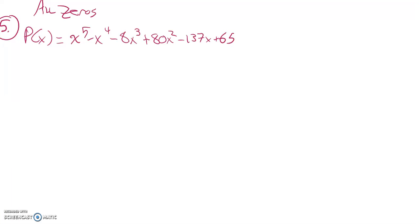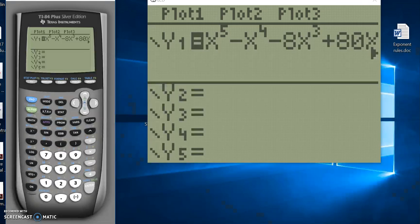Remember, my possibilities are factors of 65 over factors of 1. There's a lot of them, so I could list them out and try things out. I think what I'm going to do is I'm going to graph it.